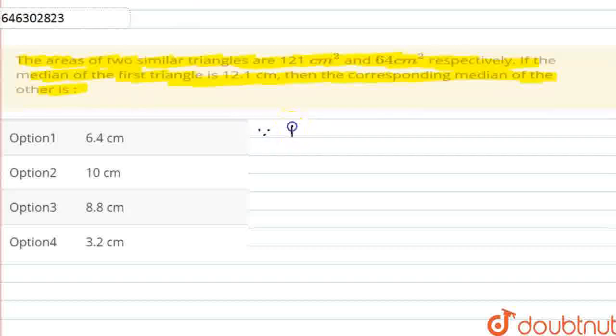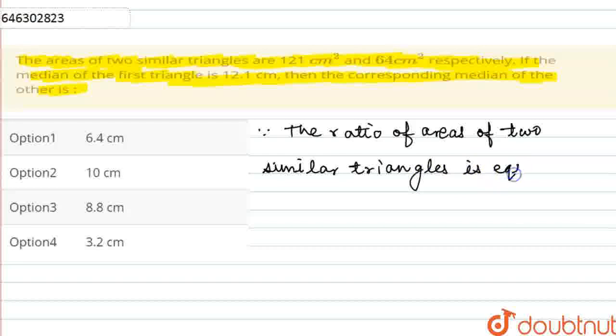Because the ratio of areas of two similar triangles is equal to the ratio of squares of their medians.